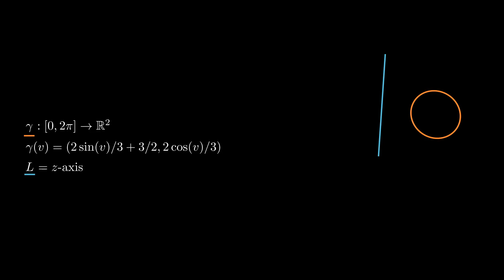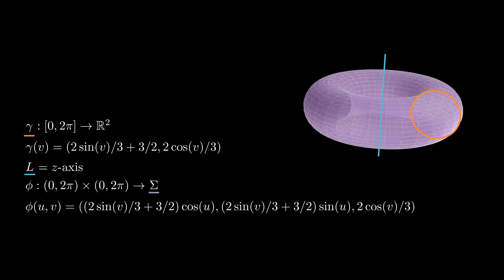Similarly, if gamma is a circle that doesn't touch L, then the corresponding surface of revolution is a torus.